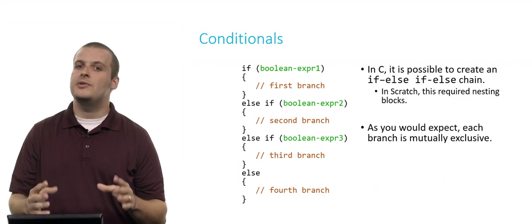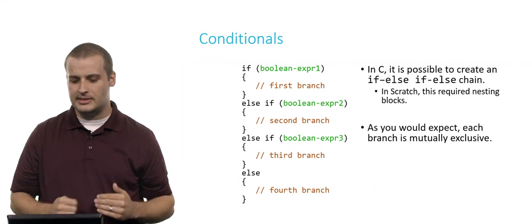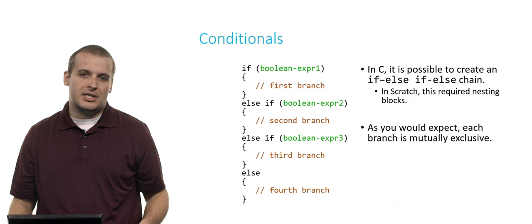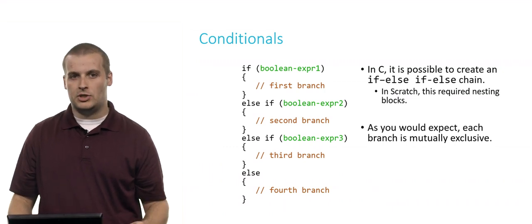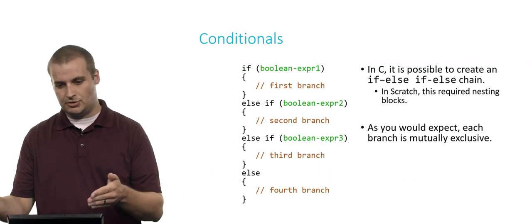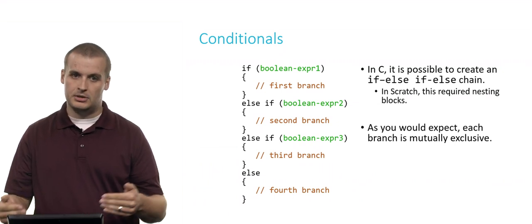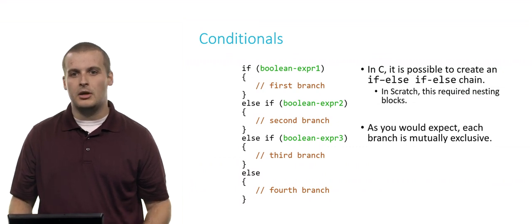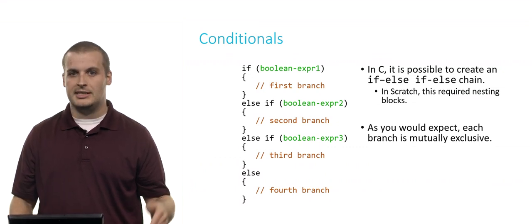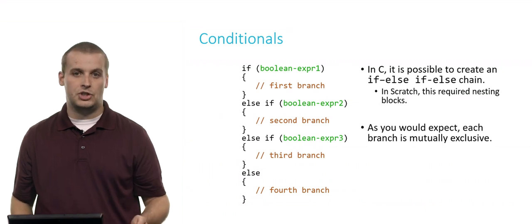But C, we don't have to do that. We can actually just have it be a chain like this. Again, as you might expect, all of these branches are mutually exclusive. You can only ever go down one of the branch. If this is true, otherwise, if this is true, otherwise, if this is true, otherwise, do this. So all four of the branches in this example are mutually exclusive. It's an if, else if, else chain.